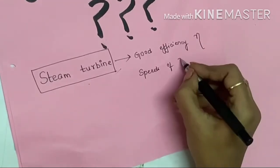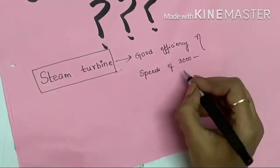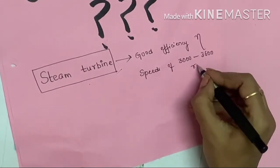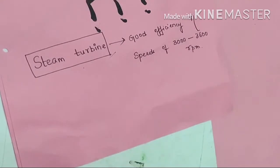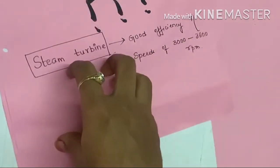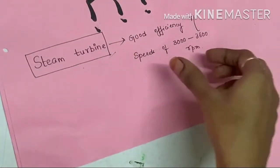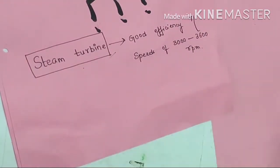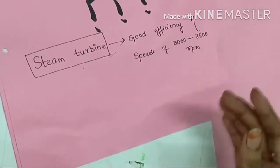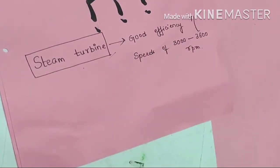If the steam turbine is driven at this range of speeds, either 3000 or 3600 or in between, then the steam turbine will be having a good efficiency. Obviously, our main goal is to run a system with the maximum efficiency that we can attain, right?